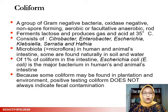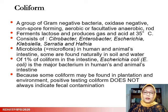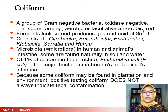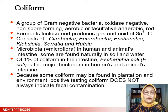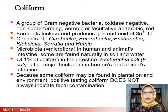The oldest indicator is coliform. This comprises a group of gram-negative bacteria with several biochemical characteristics. It mainly ferments lactose and produces gas and acid at 35°C. Coliform consists of Citrobacter, Enterobacter, Escherichia, Klebsiella, Serratia, and Hafnia. Coliform is part of the microflora in human and animal intestines, although some are found naturally in soil and water. The main species is Escherichia coli (E. coli). Because some coliform can be present outside the intestine, a positive coliform test does not always indicate fecal contamination.